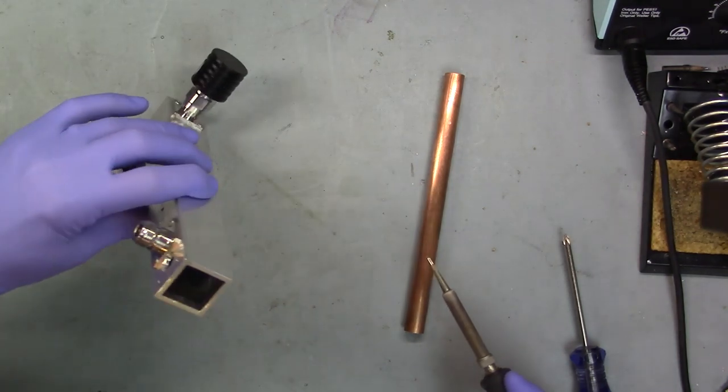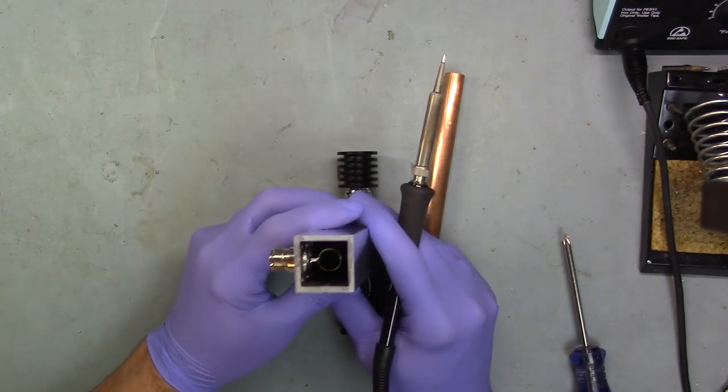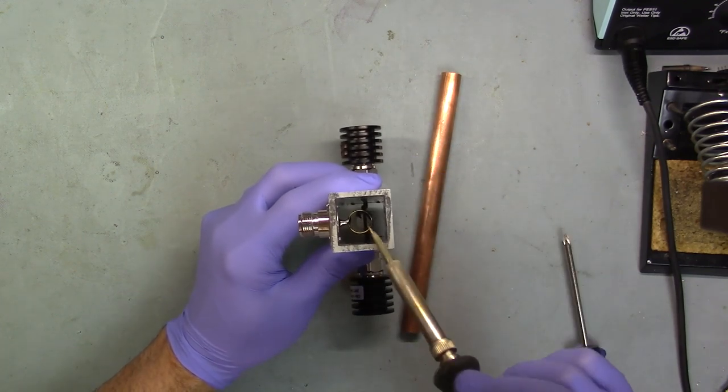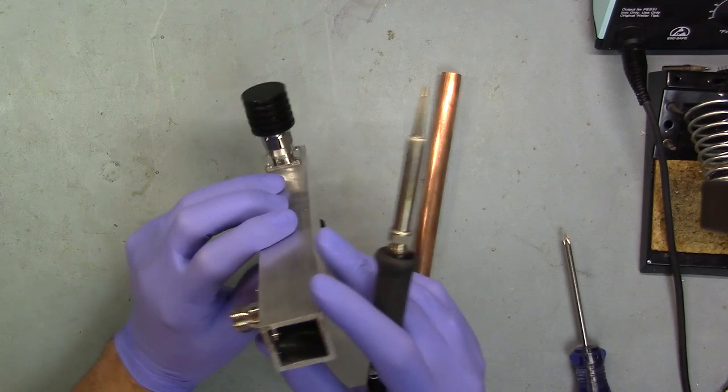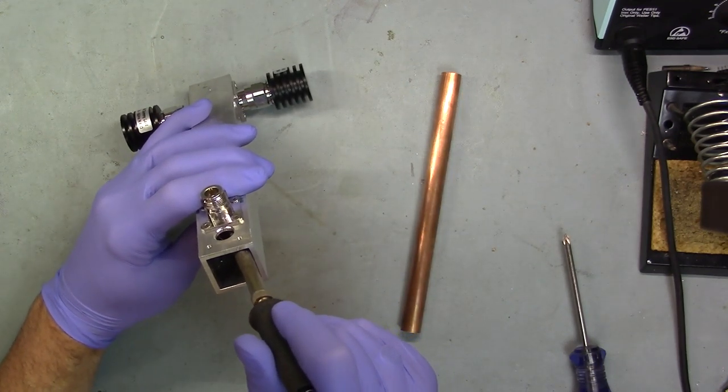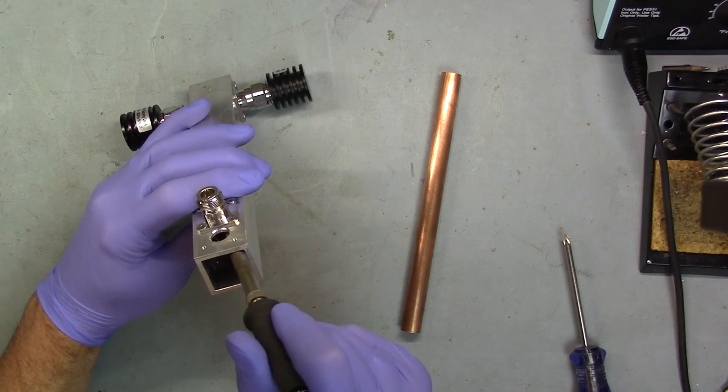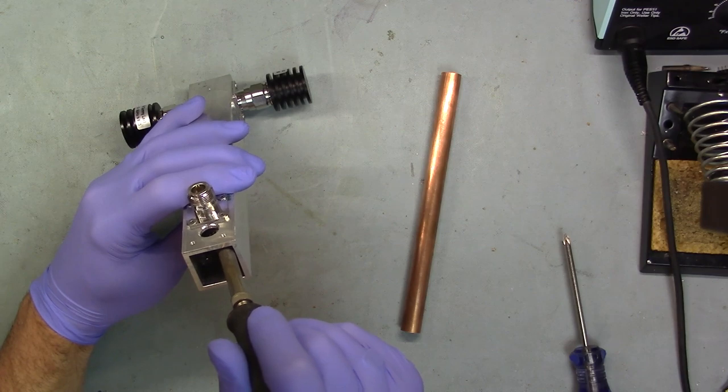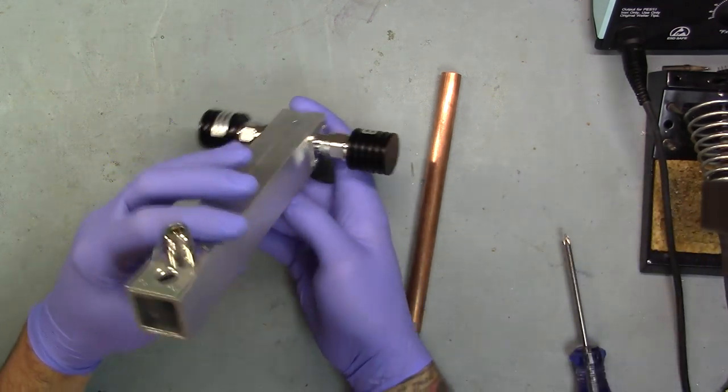So first things first, let's remove the tube from the inside here. Can you see that? So I gotta heat up this pin here and pull the tube out. I know this is riveting stuff and you're super excited like I am. I've been kind of procrastinating putting off making this thing. That's one side.